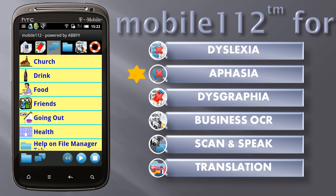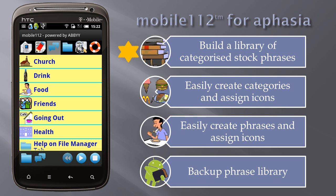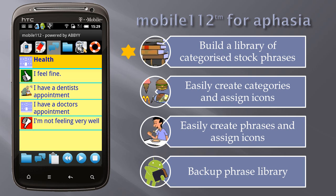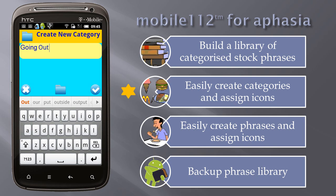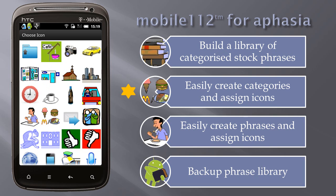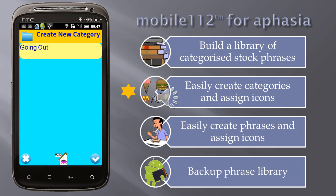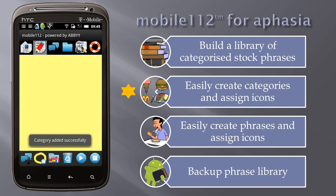Mobile 112 for aphasia. Build a library of categorized stock phrases and easily play back any phrase. Select a category, then select a phrase to speak — for example, 'I'm not feeling very well.' Easily create categories and assign icons: long press and choose new category, enter the new category name, choose an icon, and save the category.